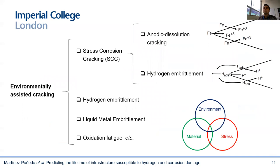Before I start showing some examples of applications, let me clarify the terminology I will be using. I'll be mostly focusing on two environmentally assisted cracking phenomena: hydrogen embrittlement and pitting and cracking due to anodic dissolution. Hydrogen embrittlement appears twice here because it can be categorized as stress corrosion cracking when hydrogen enters the material as a result of corrosion processes, or it can also happen in the absence of an aqueous electrolyte, for example when components are exposed to hydrogen gas.